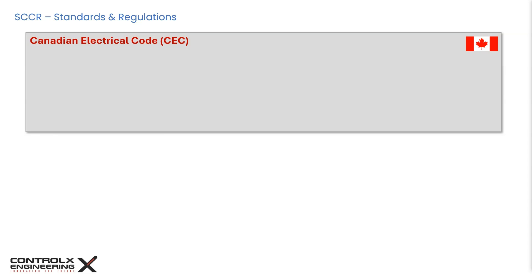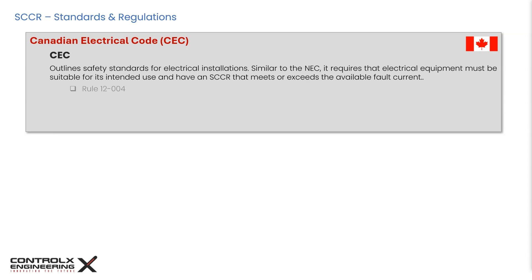The Canadian Electrical Code, or CEC, similar to the NEC, emphasizes the critical importance of considering SCCR in the selection, installation, and operation of electrical equipment. The CEC addresses SCCR in several key areas: Rule 12-004 requires that electrical equipment be suitable for the location and conditions of use, including withstanding available fault current; Rule 12-104 requires that switchboards, switchgear, and panel boards have an SCCR not less than the available fault current; and Rule 12-204 requires industrial control panels to be marked with their SCCR, unless they contain only control circuit components.